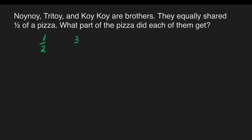We have 1/2 as our dividend. And the divisor for this case is 3. Let us now solve the problem. We have 1/2 divided by 3 — it means we need to change our divisor to its reciprocal. Our reciprocal for 3 is... we have to remember that any whole number has a denominator of 1.